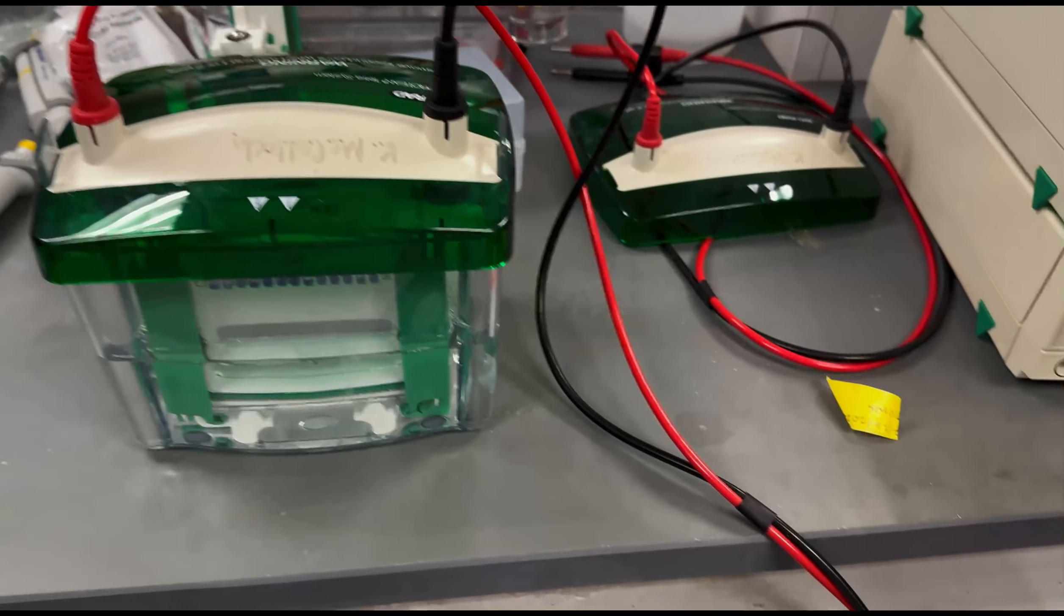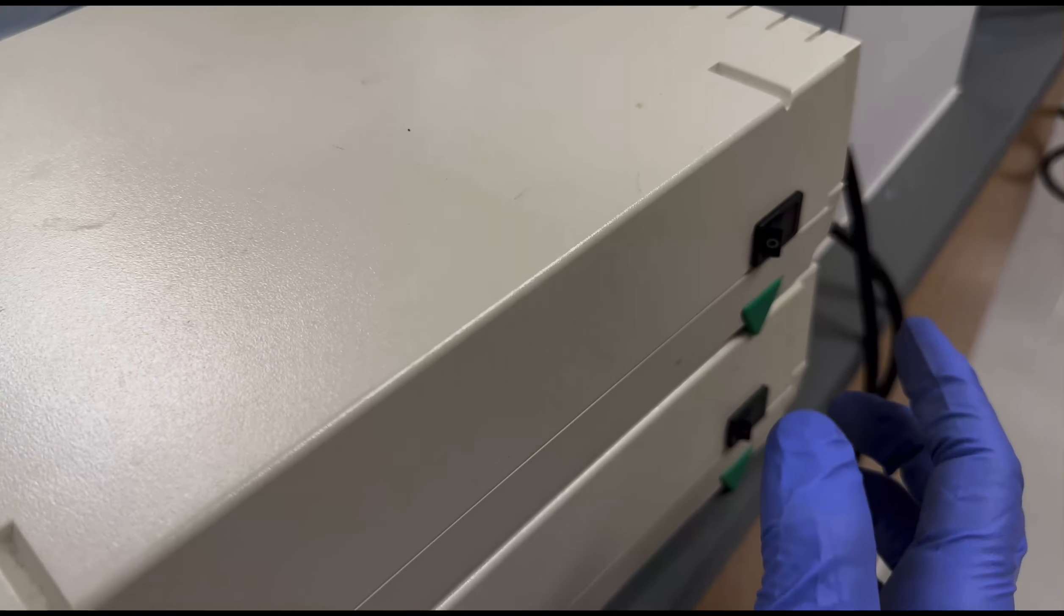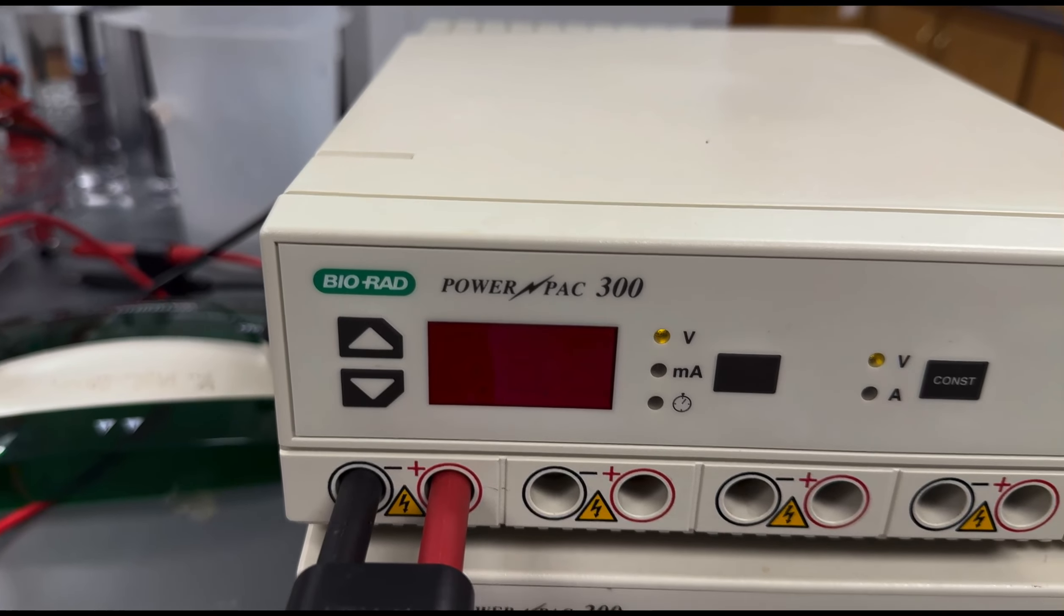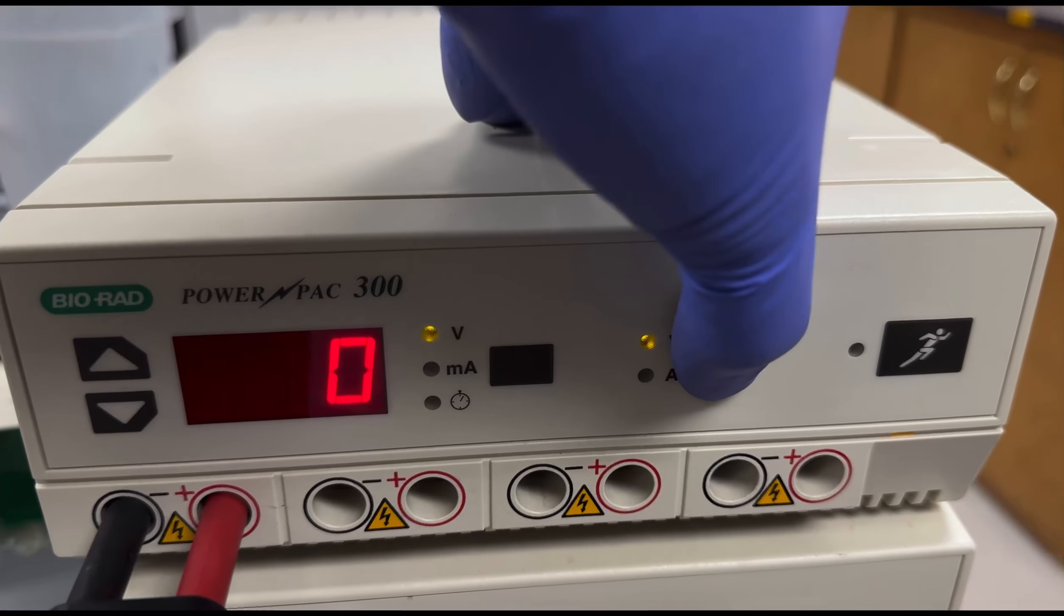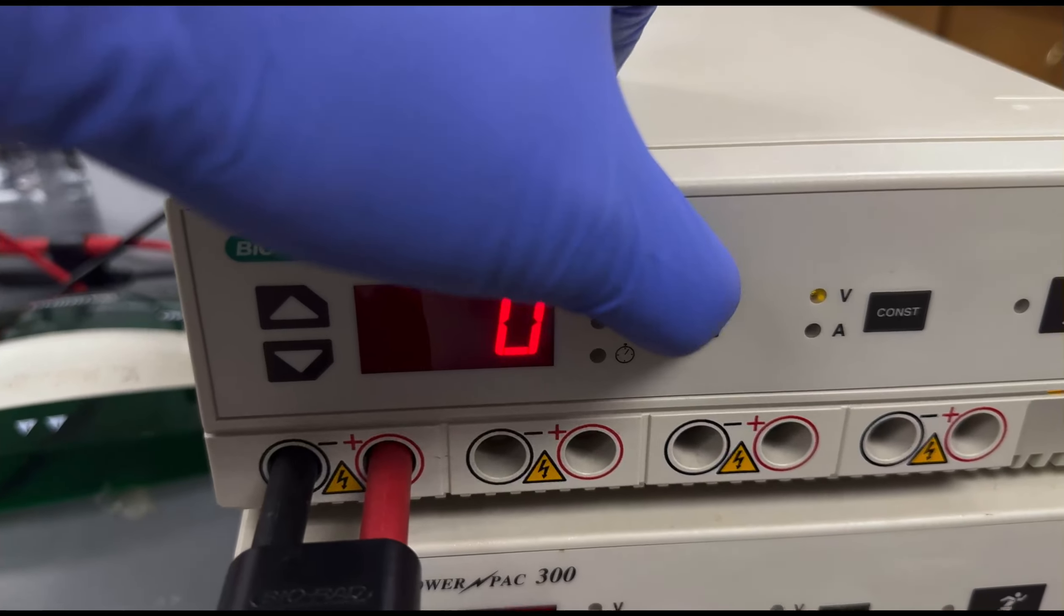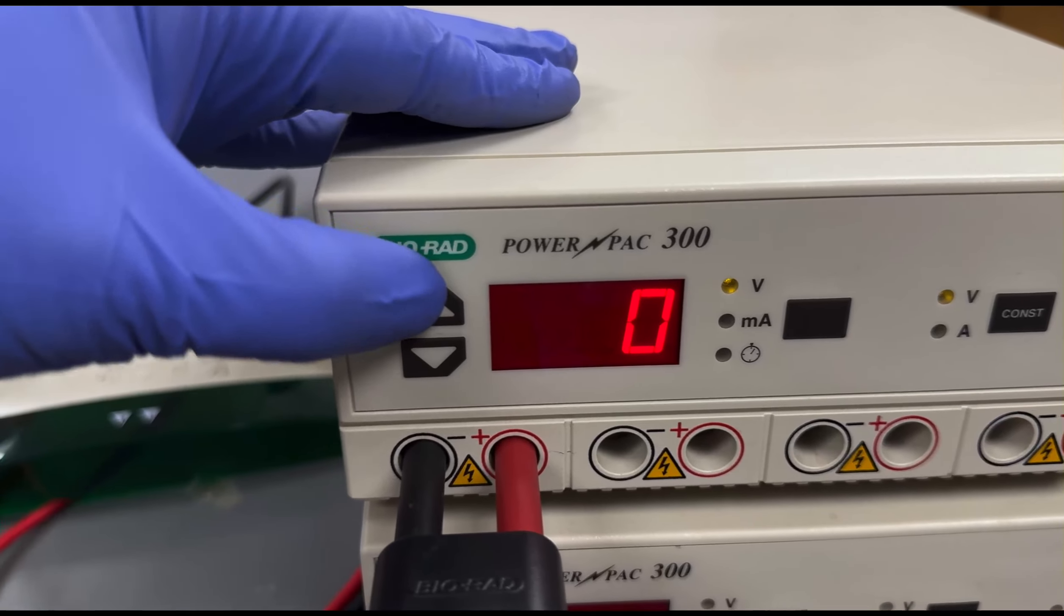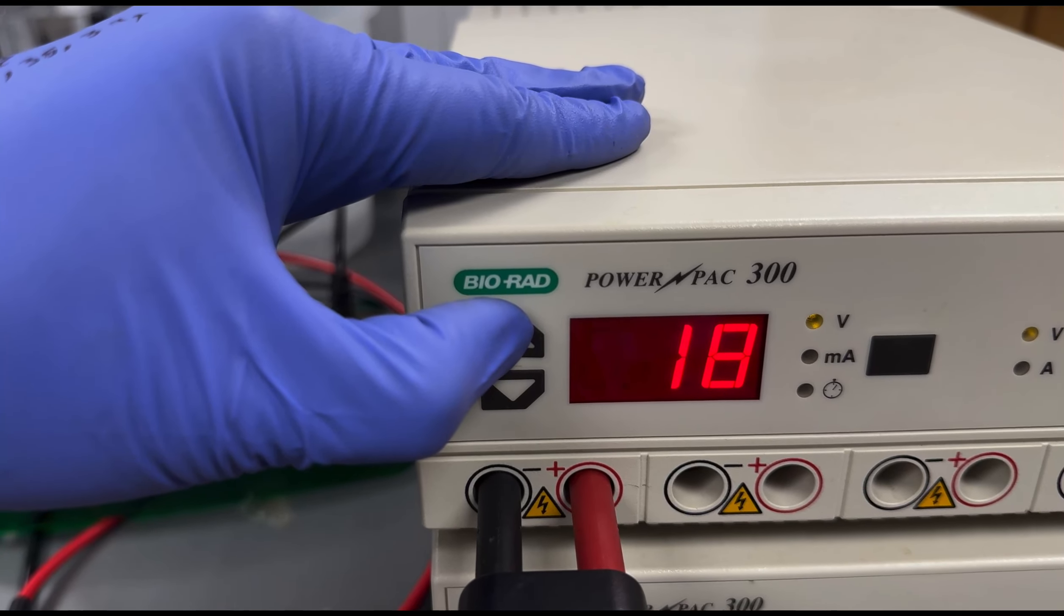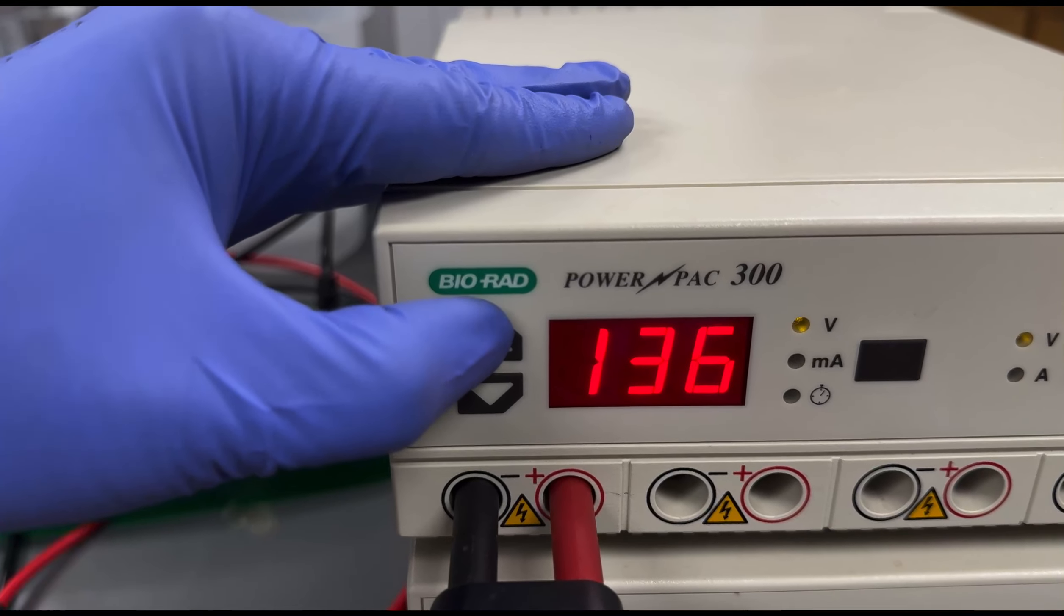Once complete, the lid containing the electrode ends is placed onto the cell, ensuring that the positive and negative current ends match. The power supply is set to a voltage of 180 volts and allowed to run for approximately 45 to 60 minutes or until the molecular weight standard reaches the bottom of the gel.